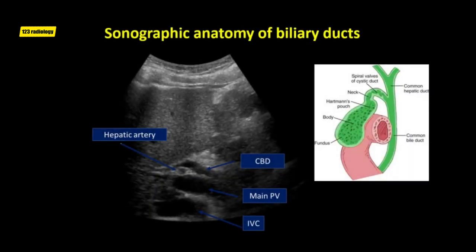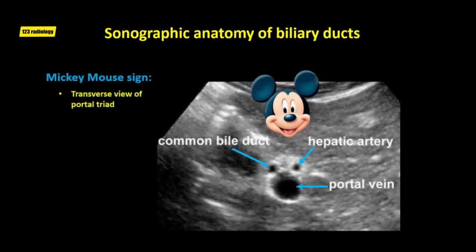The right and left hepatic ducts join to form the common hepatic duct, which is located anterior to the right and main portal veins. The distal cystic duct joins the common hepatic duct posteriorly to form the common bile duct. On longitudinal view, the proximal common bile duct at the porta hepatis courses anterior to the main portal vein and right hepatic artery. On transverse view, this portal triad has been described as the 'Mickey Mouse sign,' where the portal vein is Mickey's face, the common bile duct is the right ear, and the hepatic artery is the left ear.